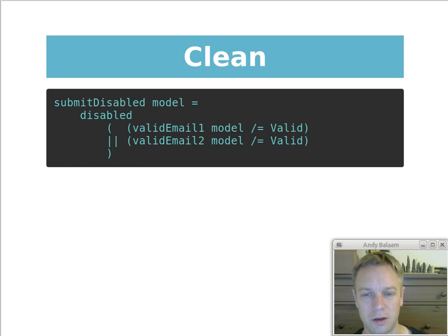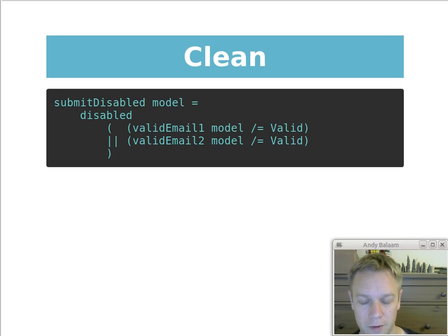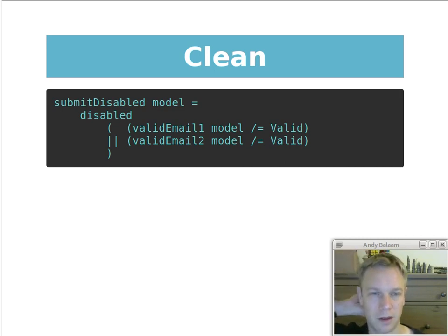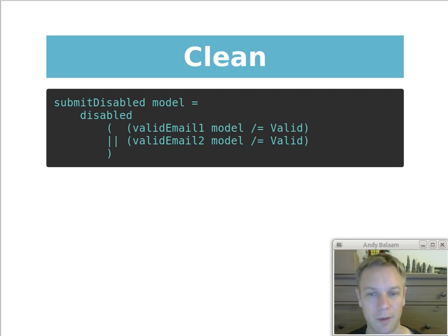The submitDisabled function takes in a model and returns a 'disabled' HTML attribute. The rest of the code evaluates to true or false for whether the button is disabled. It calls two more functions, validEmailOne and validEmailTwo, both taking the model. If both return 'valid', the button is enabled; otherwise it's disabled. The key point is: the decision about whether to enable the submit button is not made based on 'something changed so I'd better flip a flag' — it's based on whether the model is valid.